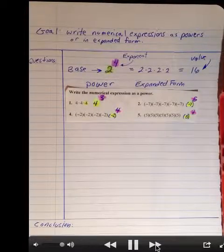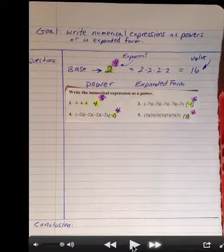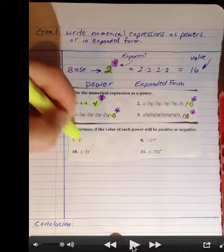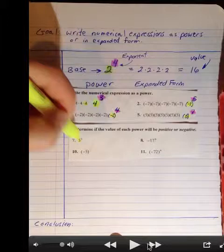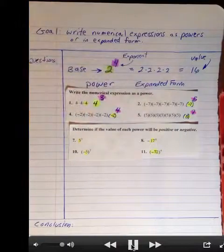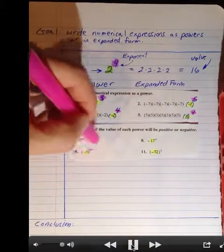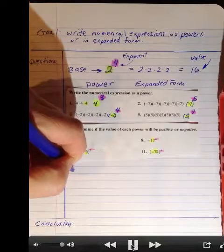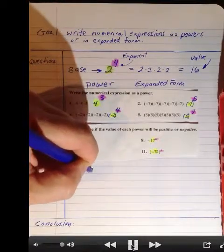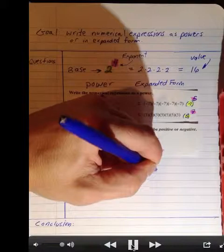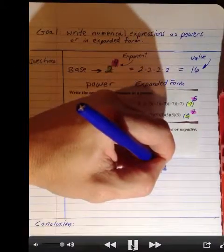Now we're going to determine if values are going to be positive or negative. I'm going to highlight the base in yellow and the exponent in pink. If there is a positive base, the value is positive. But if the base is negative, then every other time we multiply it the result alternates — on the even times it's positive, and on the odd times it's negative.